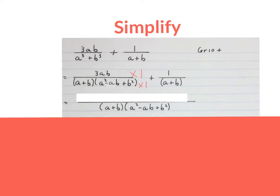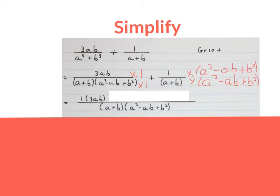You ask: what do I times this bottom to get to this bottom? I times this denominator with 1 to get to this denominator, so I also times the top by 1 — it will be 1 times 3AB. Then you ask: what do you times this denominator to get to the full denominator? I have to times this denominator with (a squared minus AB plus B squared), so also times the top by that. Remember to put the plus 1 down and the bracket behind it.